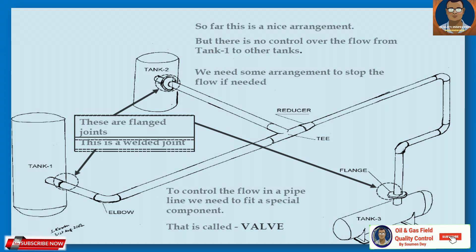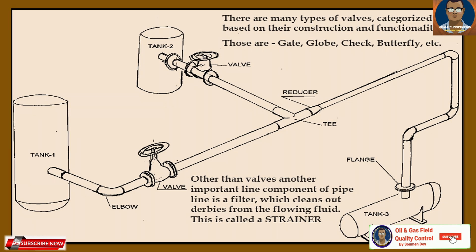There are many types of valves. We have discussed some categories based on their construction and functionality — gate valve, globe valve, check valve, butterfly valve, ball valve, and others. Other than these valves, another important line component of the pipeline is a filter which cleans out debris from the flowing fluid. This is called a strainer.